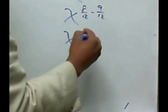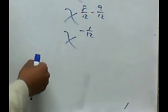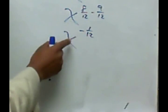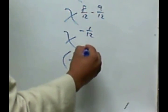And so now I get x to the negative 1/12. Now, the negative we're going to remove by taking the reciprocal of the base. So we have 1 over x to the 1/12 power.